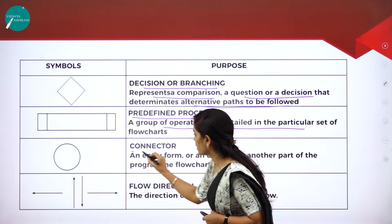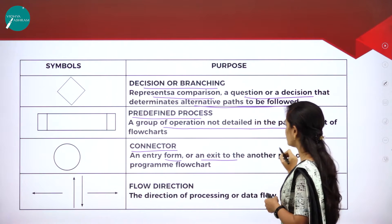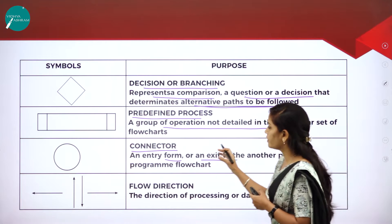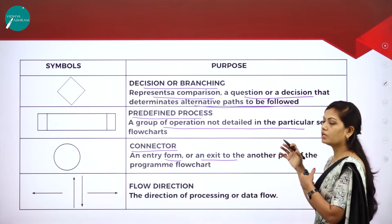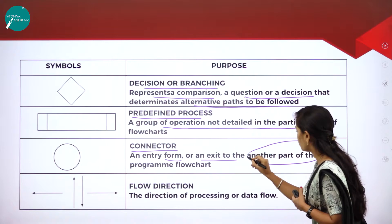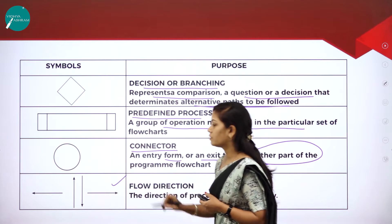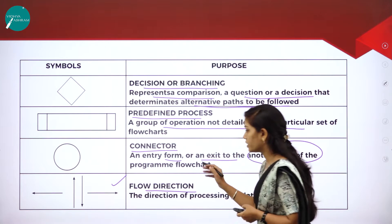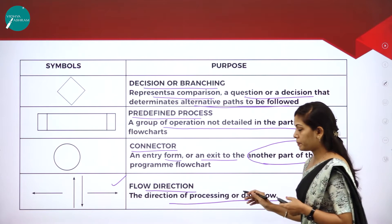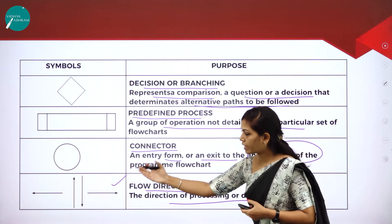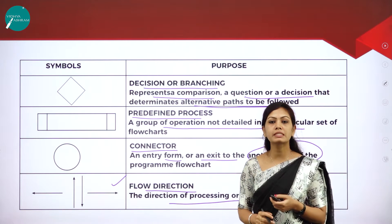The next symbol is the connector, represented by a circle. It represents an entry from or an exit to another part of the program flowchart. The next symbol is the arrow for flow direction — it represents the direction of processing or data flow. These are the basic symbols used in flowcharts.